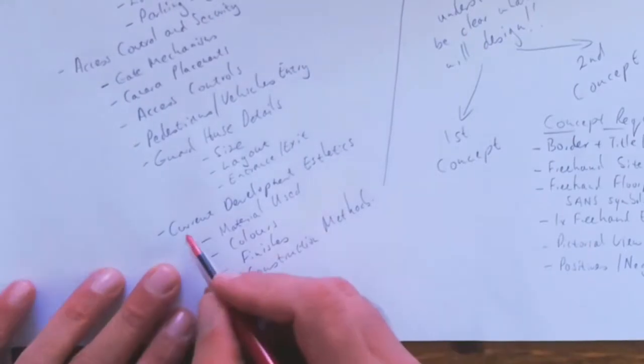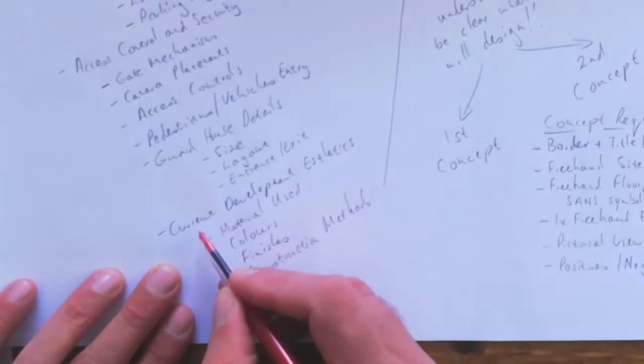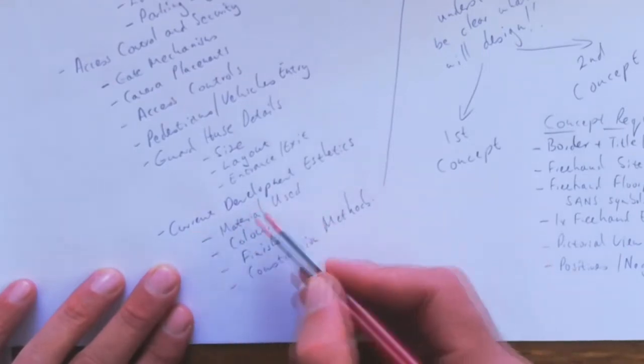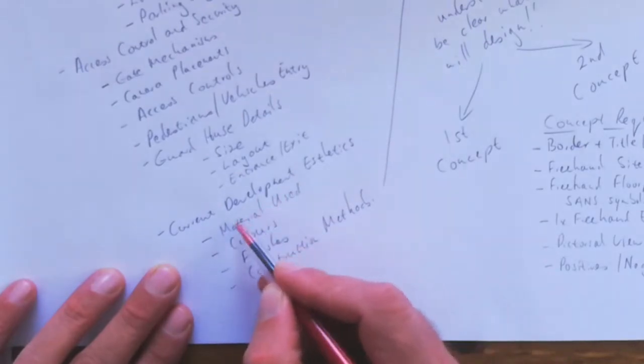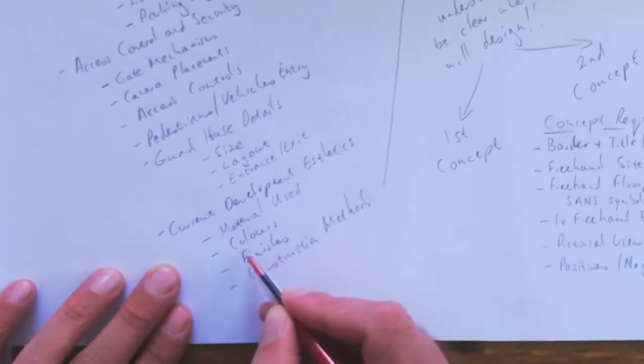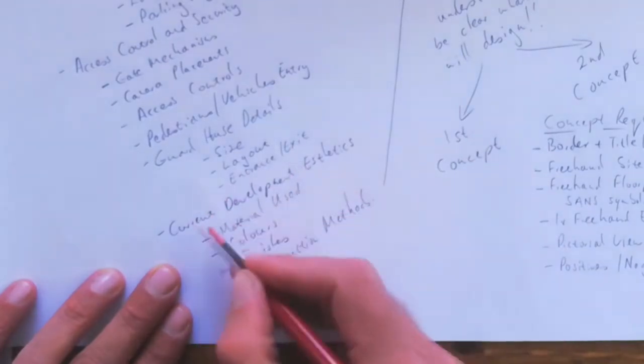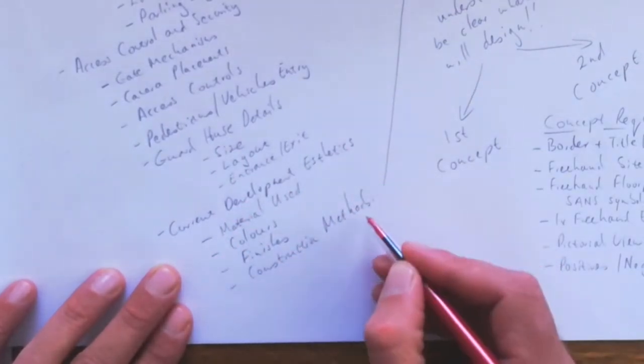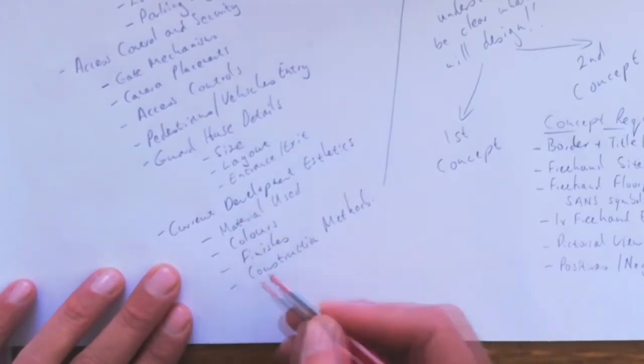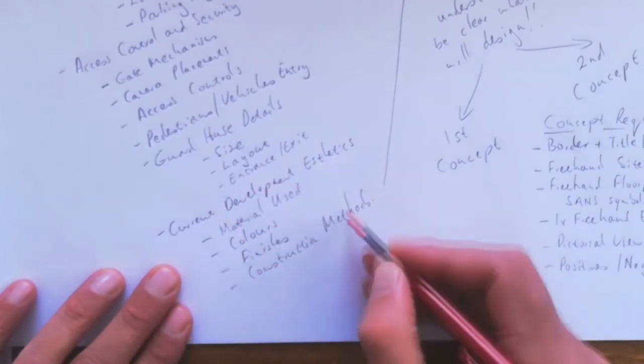The third item is current development aesthetics—the current campus. You've all been there. A good idea is to take your camera and walk around, take pictures of the materials used: the bricks, the stones, the colors, what finishes are done, where is it plastered, what is not plastered, the concrete finishes. Take pictures because whatever you design needs to fit in with the current aesthetics of that campus. What construction methods were used, what type of roofing? There are log homes, brick houses—different things to consider to ensure your design fits in.